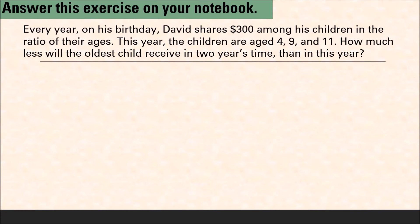Let's check your work. Every year on his birthday, David shares three hundred dollars among his children in the ratio of their ages. This year the children are aged four, nine, and eleven. How much less will the oldest child receive in two years' time than in this year? When working with word problems, it always helps to note the keywords and identify the information you need.